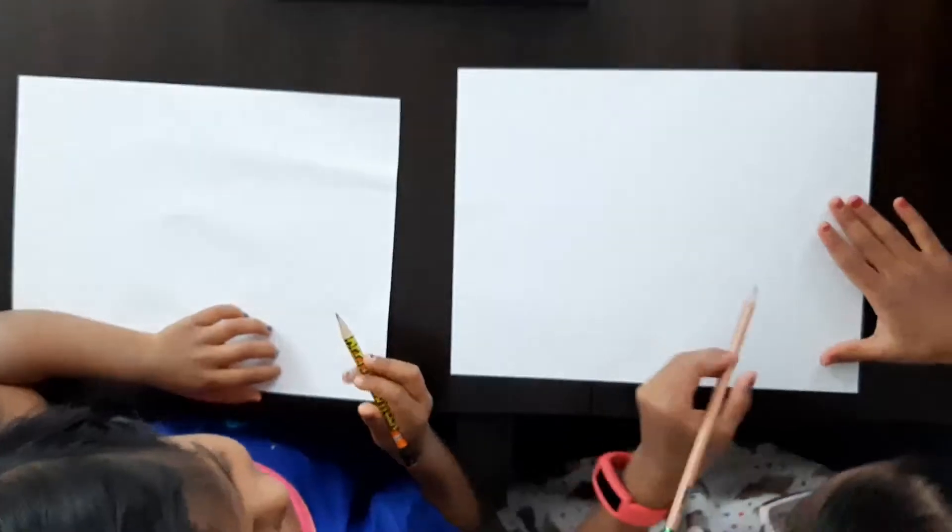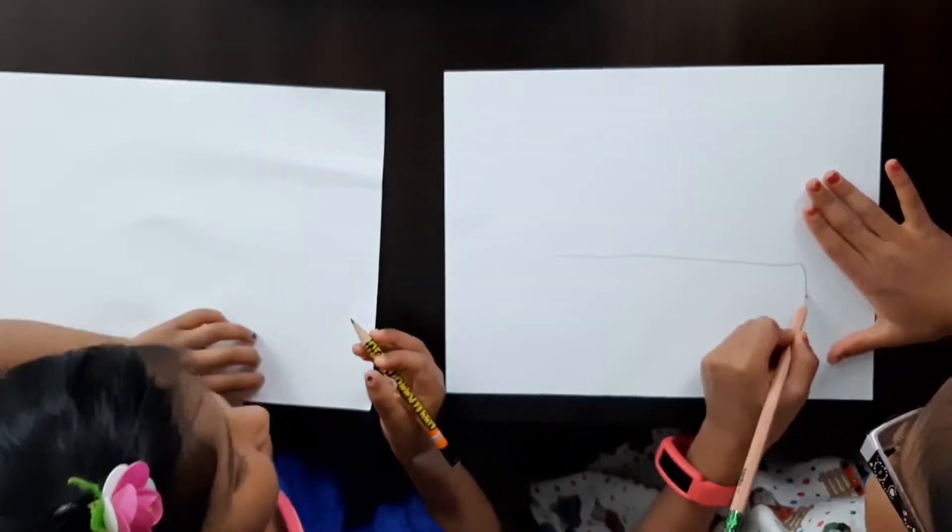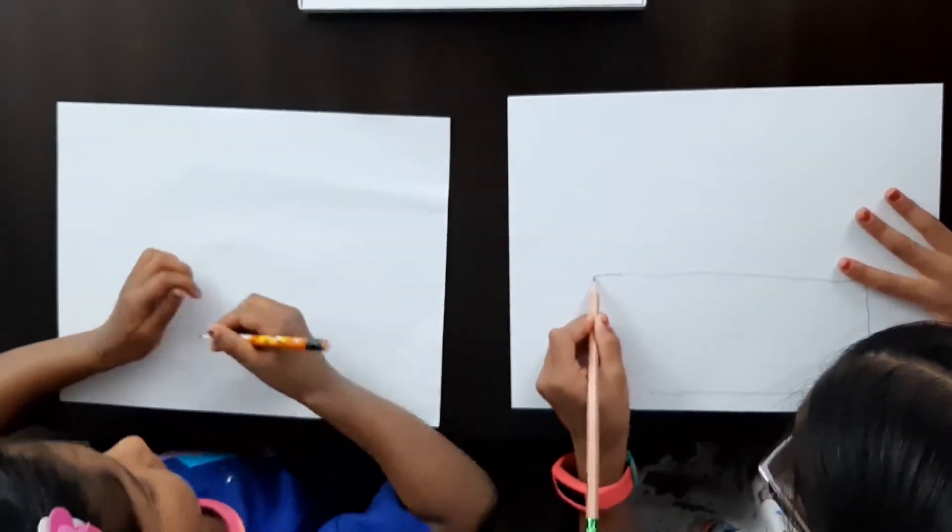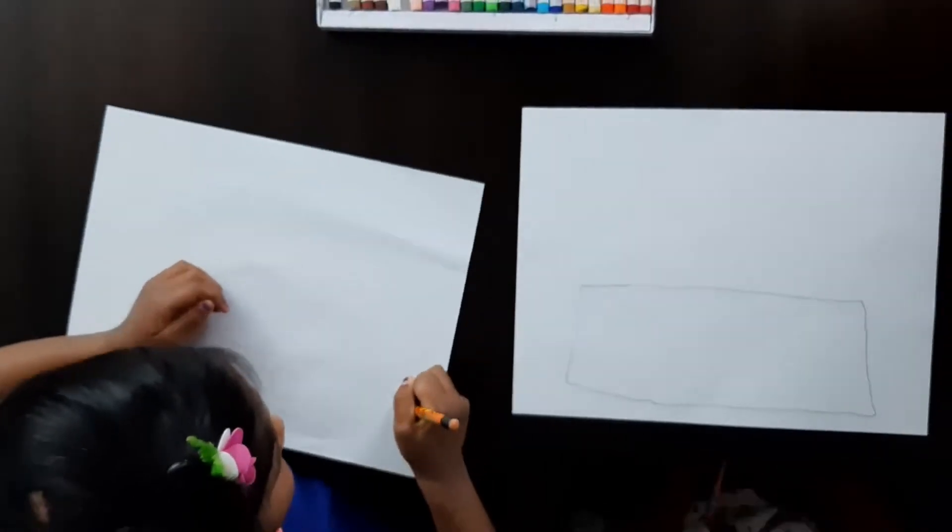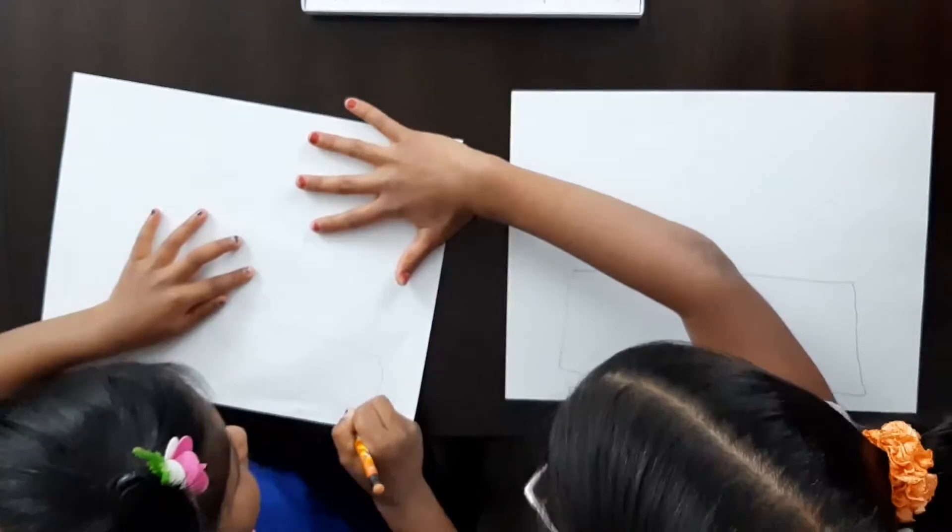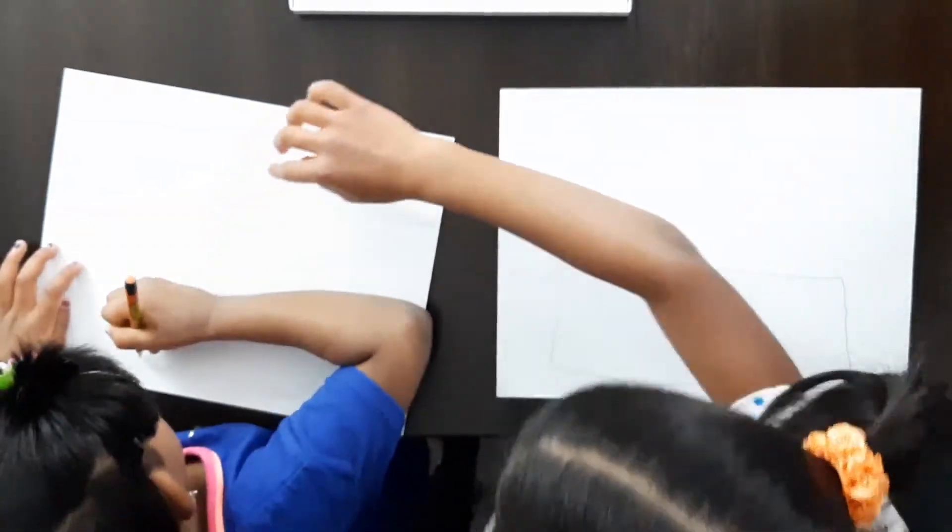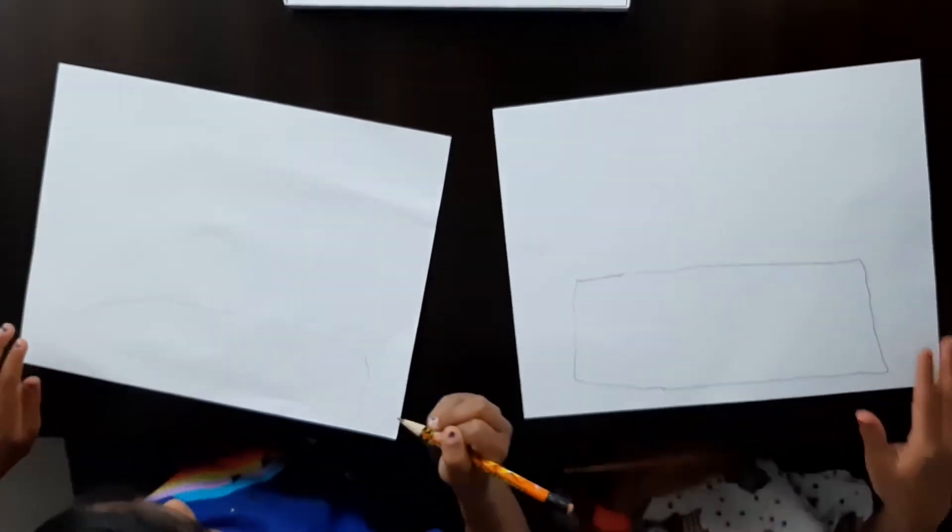So first, we are going to draw a big rectangle on our paper. Just like this. We don't want to fill the whole paper up. It's a rectangle. Stop moving the paper. Oh, pointy birthday cake.